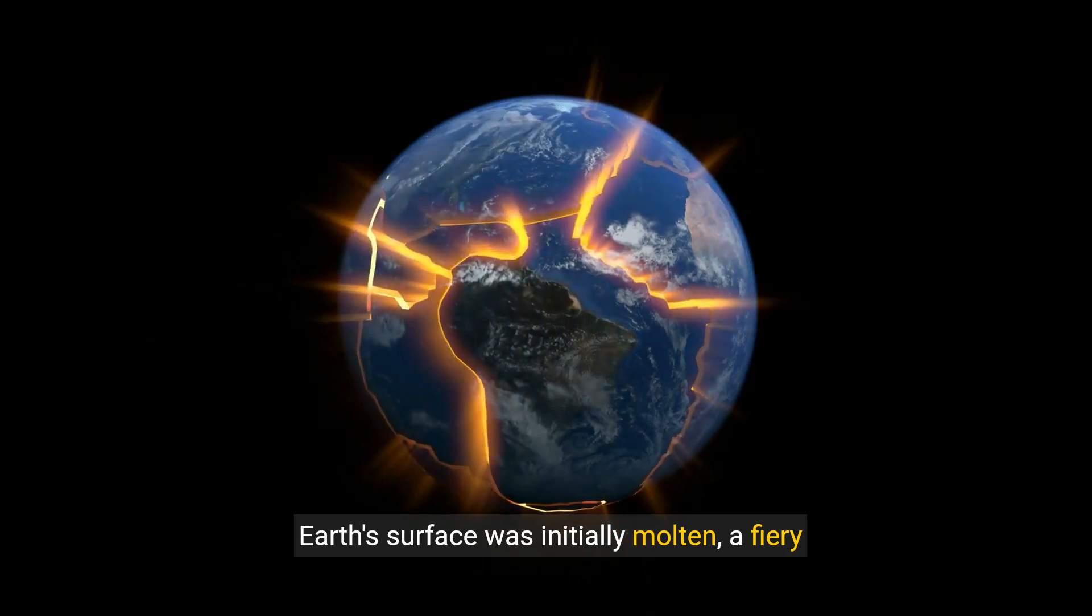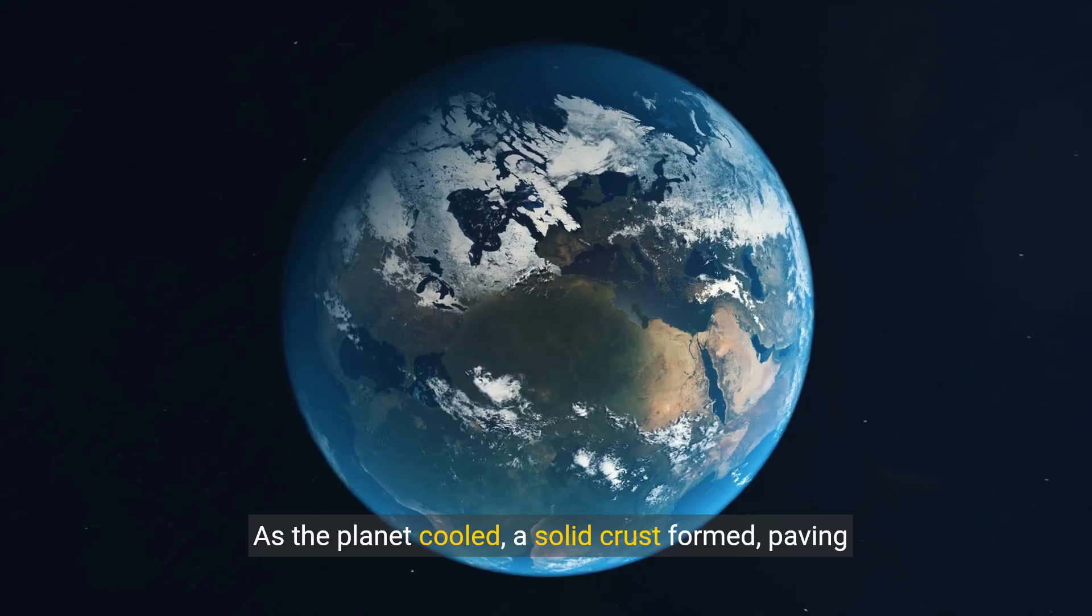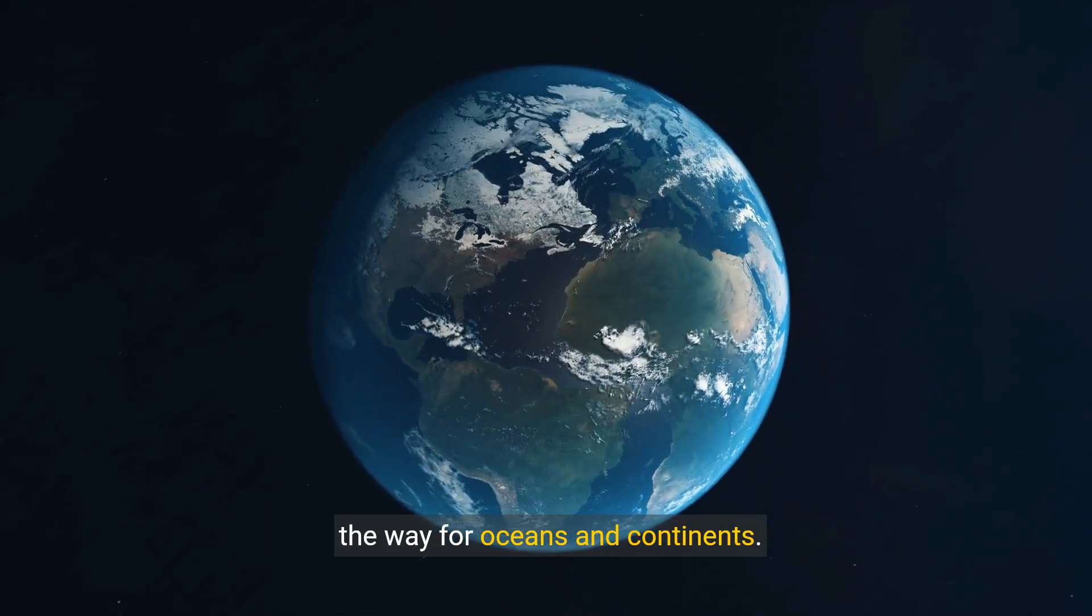Earth's surface was initially molten, a fiery landscape of lava and volcanic activity. As the planet cooled, a solid crust formed, paving the way for oceans and continents.